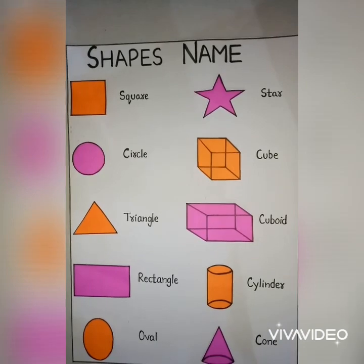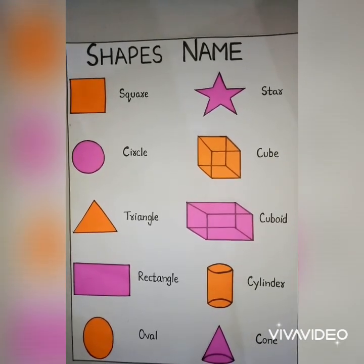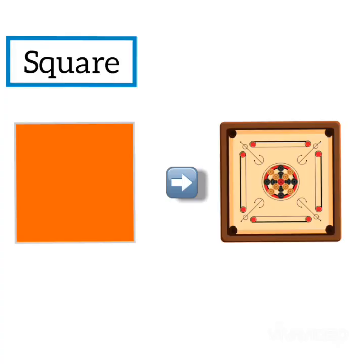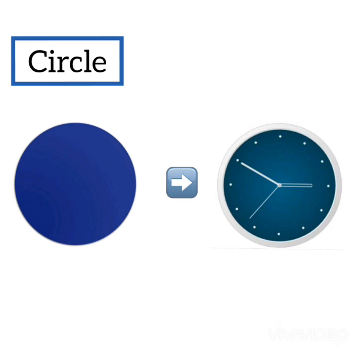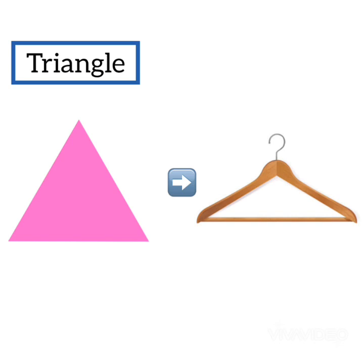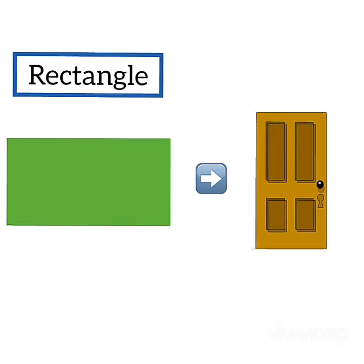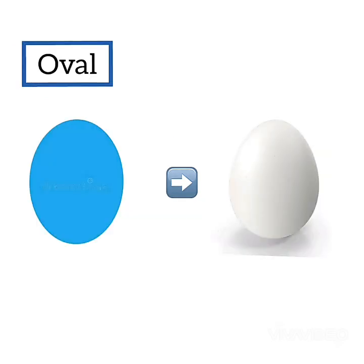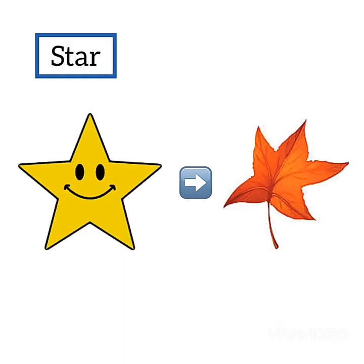Now I am going to show you some examples of shapes. Square — the shape of this cannon board is like a square. Circle — the shape of this clock is like a circle. Triangle — the shape of this hanger is like a triangle. Rectangle — the shape of this door is like a rectangle. Oval — the shape of this egg is like an oval. Star — the shape of this leaf is like a star.